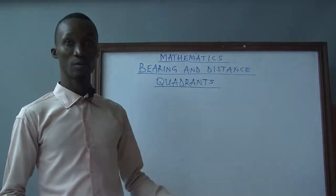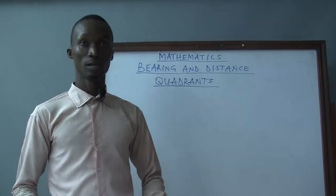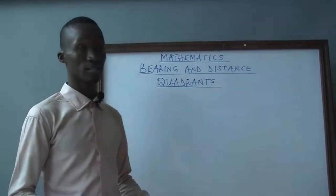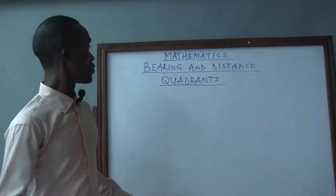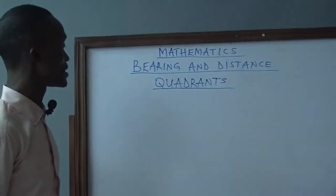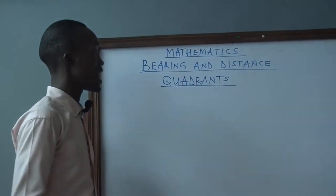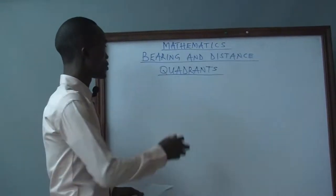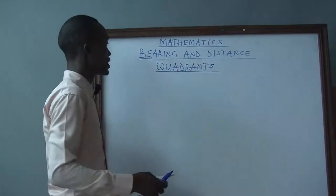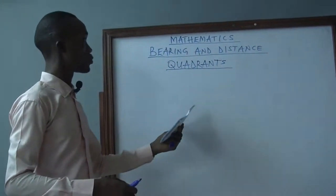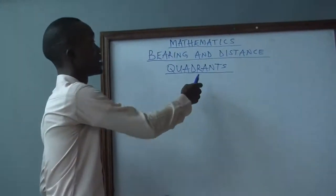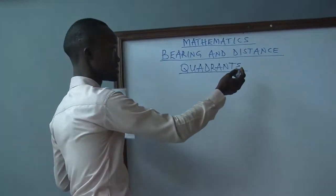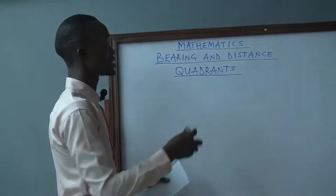With that, we move to our lesson for today. We are moving further to quadrants. From our last lesson we looked at angles between zero degrees and 90 degrees, but when we have angles greater than 90 degrees, that is where quadrants come in. Before we move to quadrants, there are some basic things we need to consider.